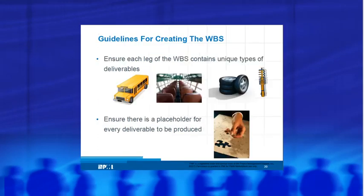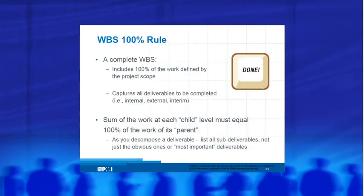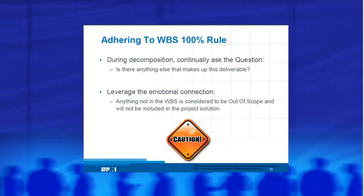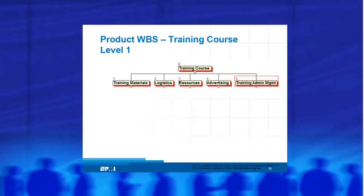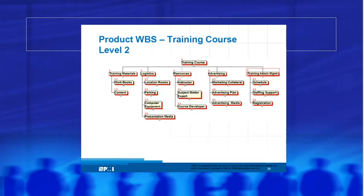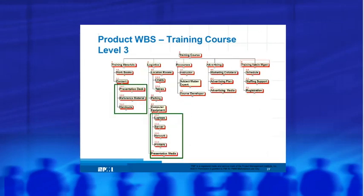Make sure each portion of the WBS has unique deliverables. There's something called the 100% rule: all of the work in the project is defined by the project scope, and summing up all the legs of the WBS equals 100% of the work. Here's an example: a training course. Even though a training course is an intangible project, notice you've got materials, logistics, resources, advertising, workbooks, content, instructor, subject matter expert. You can see right away that even though it's intangible, there are tangible deliverables — and I don't see any activities in this work breakdown structure, only deliverables.